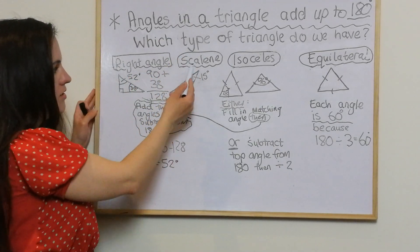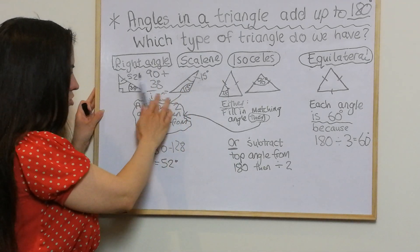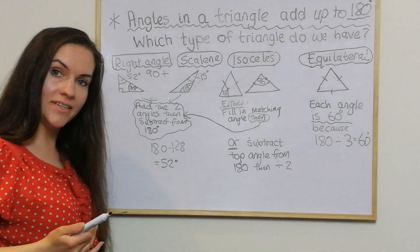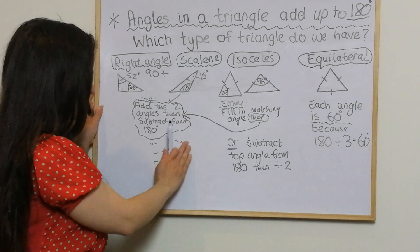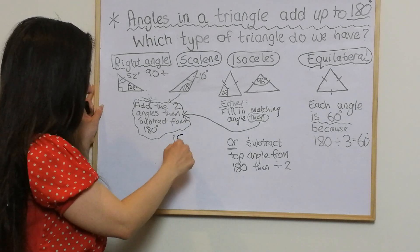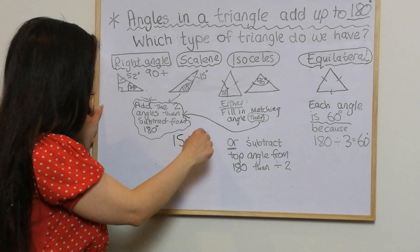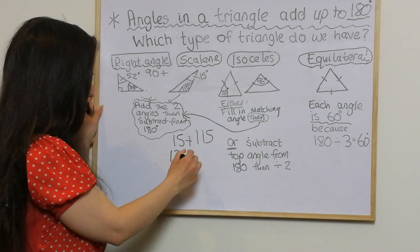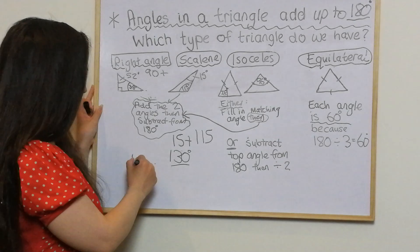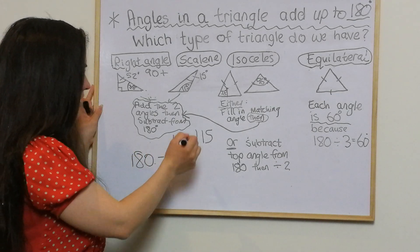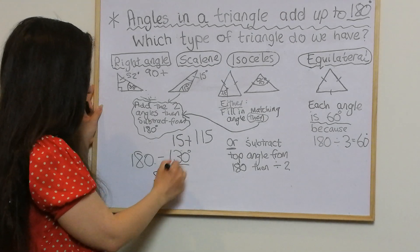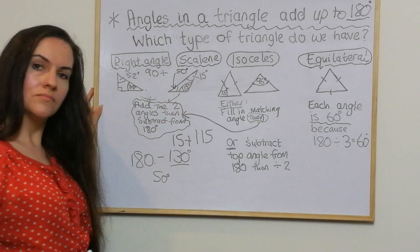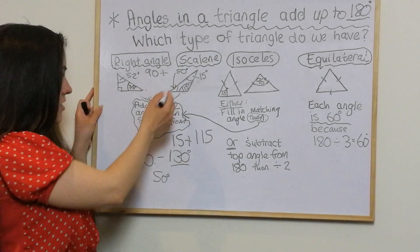The next one is quite similar. In a scalene triangle, it tells me to add the two angles then subtract from 180. So I do 15 add 115, which gives me 130 degrees, and then subtract that from 180: 180 take away 130 gives me 50 degrees. So that angle is 50 degrees. The principle for working these out is very similar.